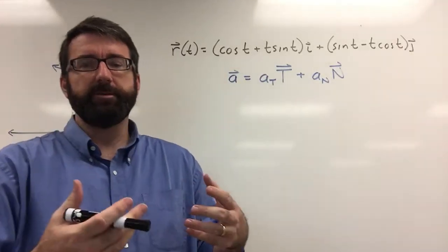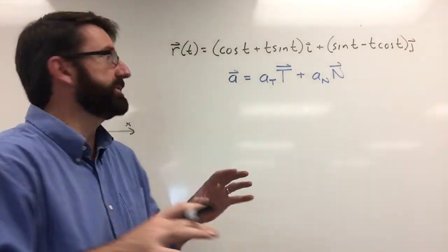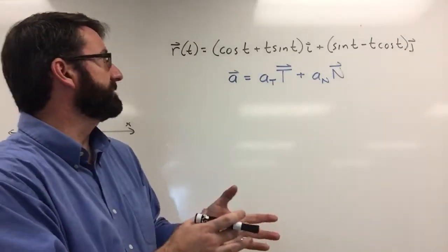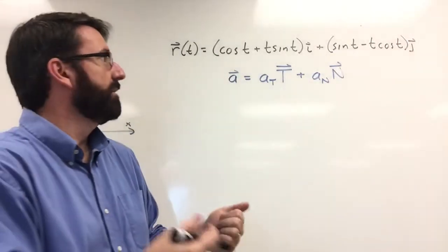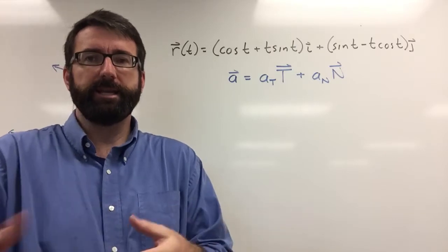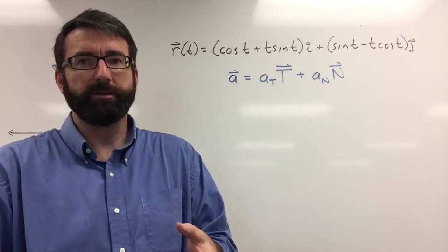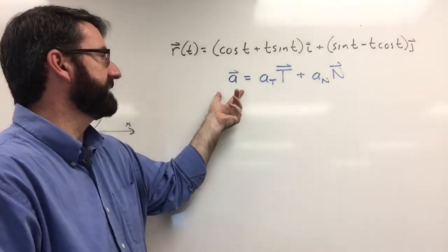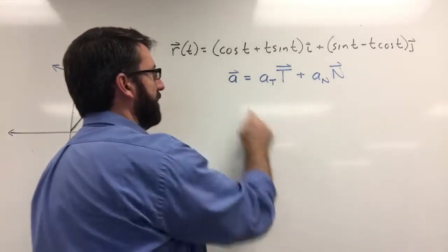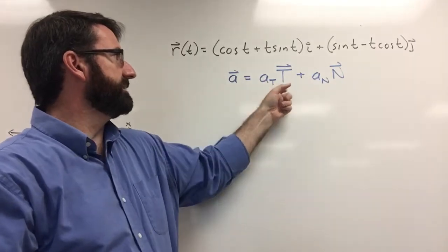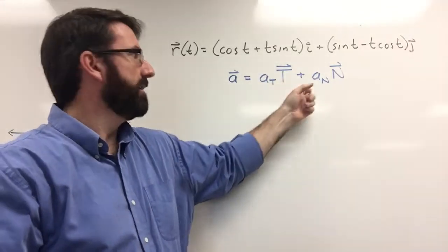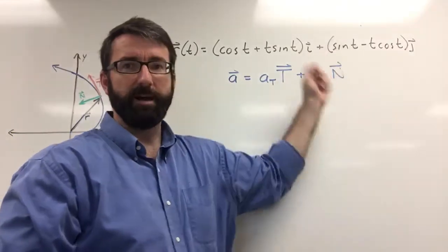For this example, we're asked to find the acceleration of the motion given by this position vector, r of t equals cosine t plus t sine t times i, plus sine t minus t cosine t times j. We're asked to do that without actually finding T and N, our unit tangent vector and unit normal vector — just find the acceleration in terms of those two unit vectors using the formula that acceleration equals the tangential component times the unit tangent vector plus the normal component times the unit normal vector.